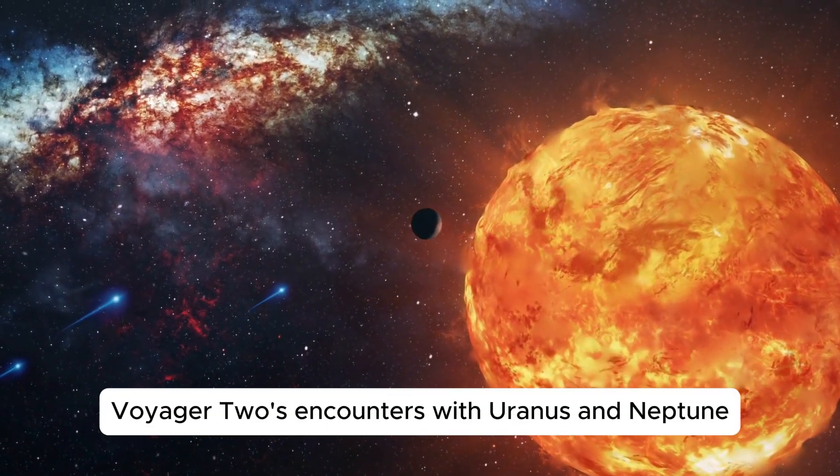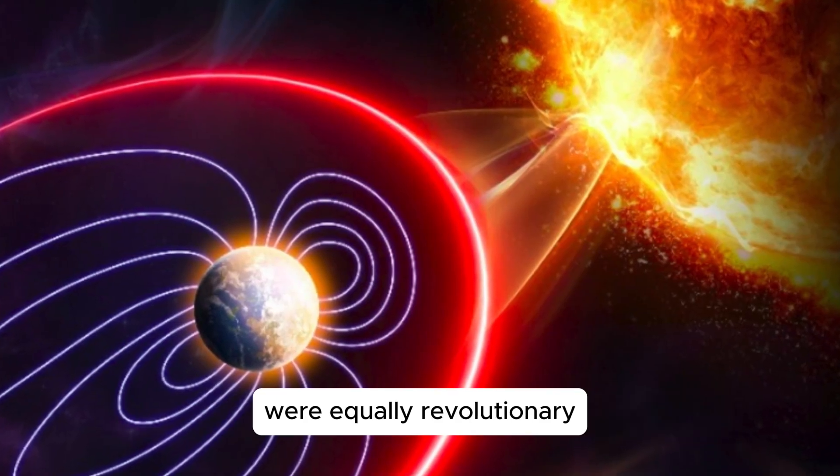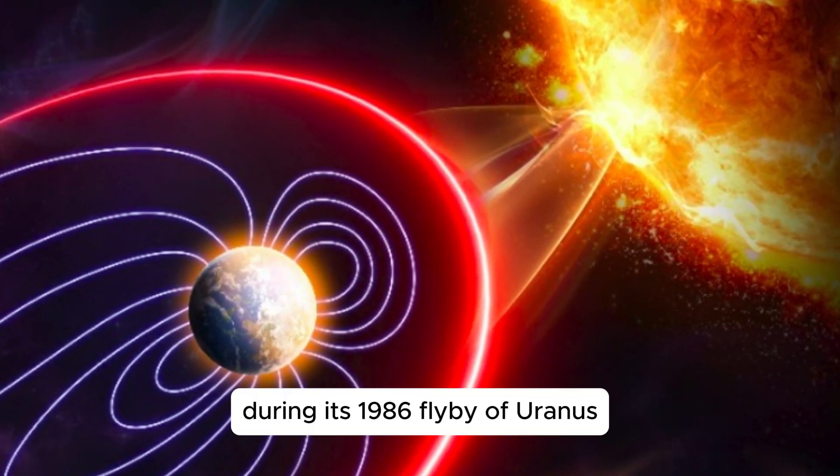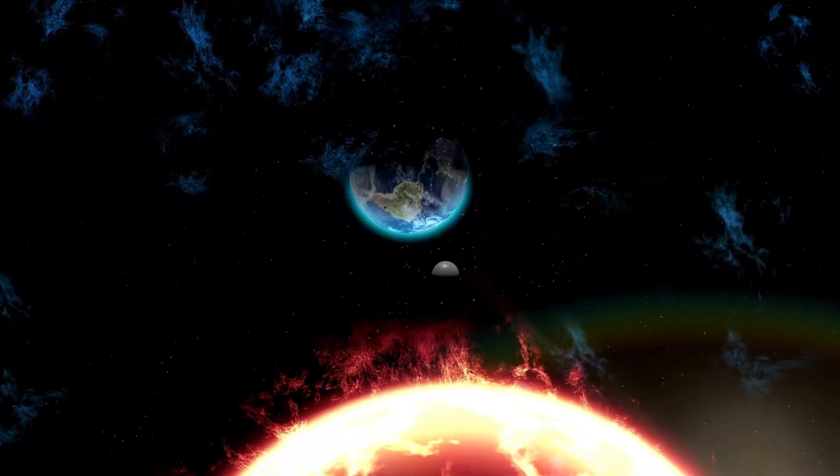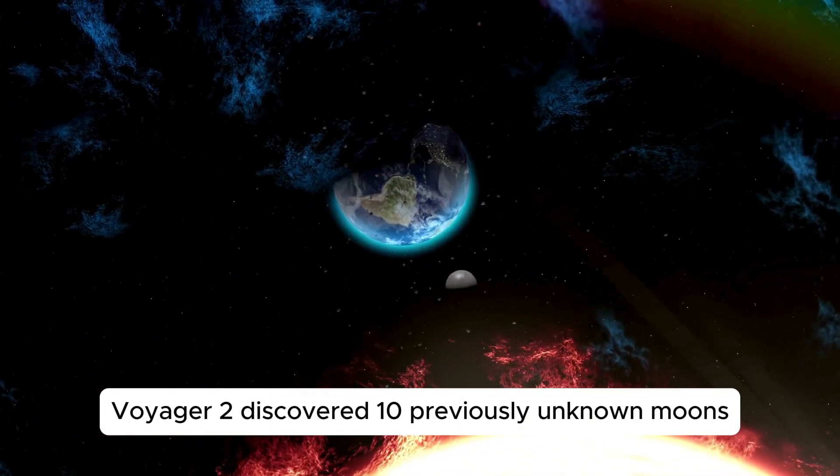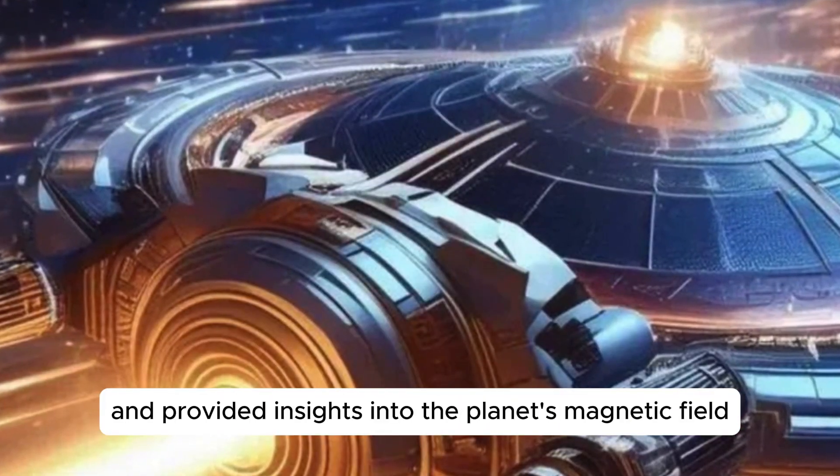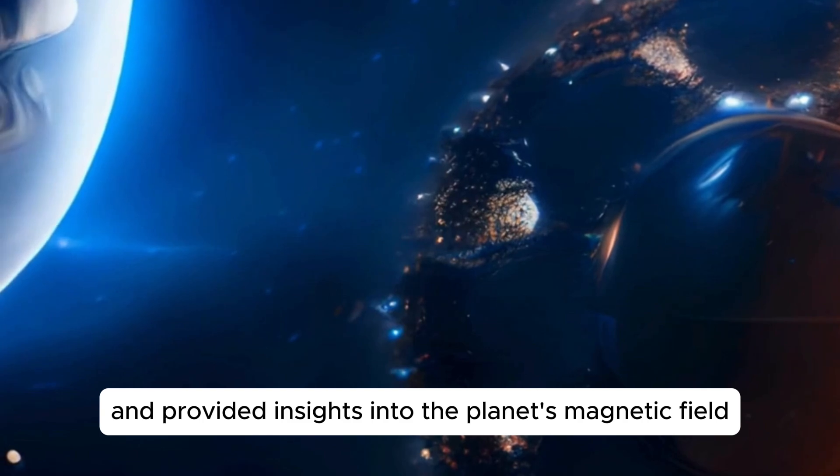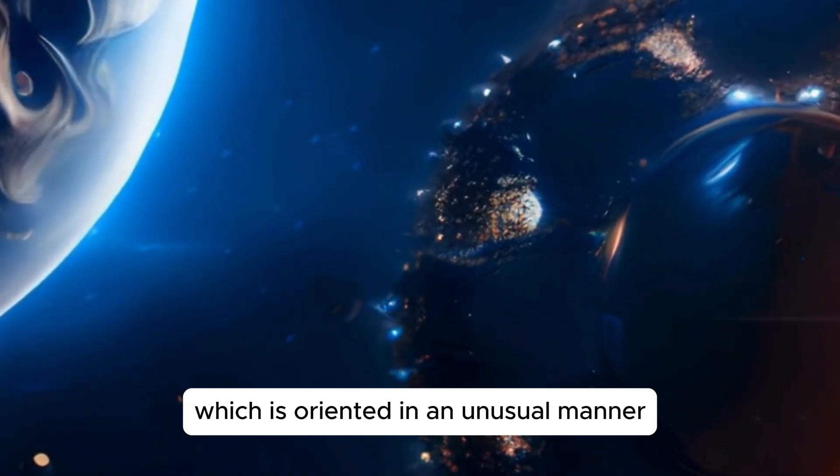Voyager 2's encounters with Uranus and Neptune were equally revolutionary. During its 1986 flyby of Uranus, Voyager 2 discovered 10 previously unknown moons and provided insights into the planet's magnetic field, which is oriented in an unusual manner.